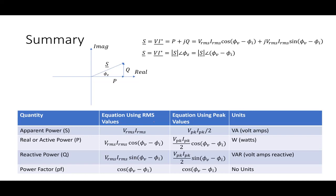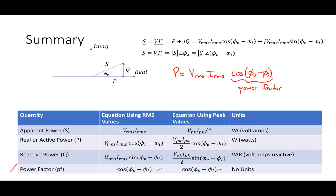One other important point: in P equals V RMS I RMS times cosine(phi V minus phi I), this cosine term is also given a name — it's called the power factor. The power factor tells us something about how in phase the voltage and the current really are. It's unitless, and the equation doesn't change whether using peak or RMS values.